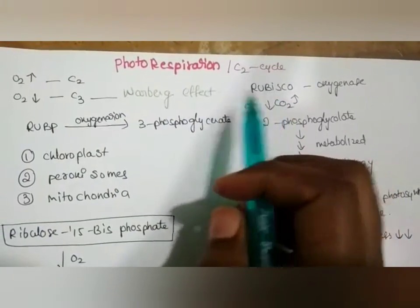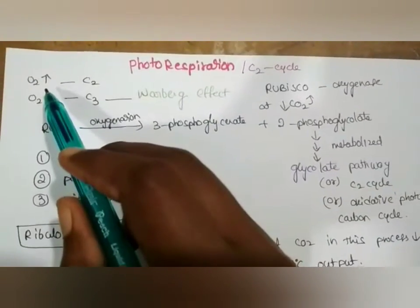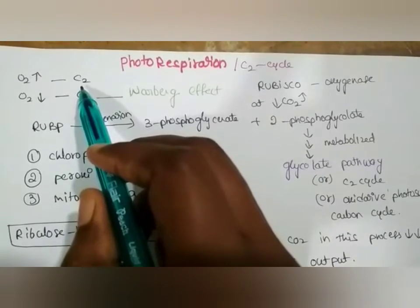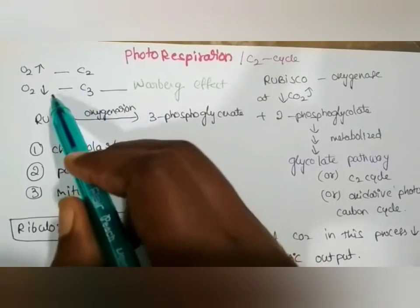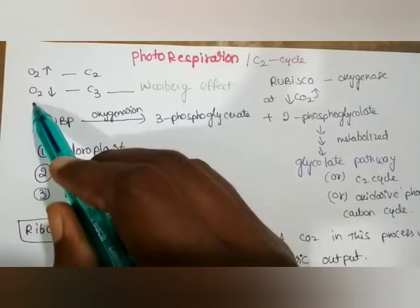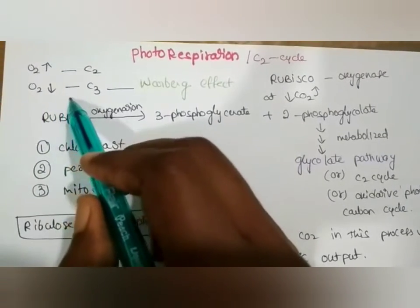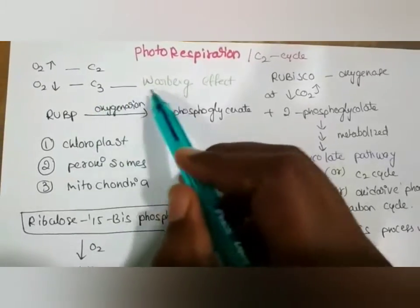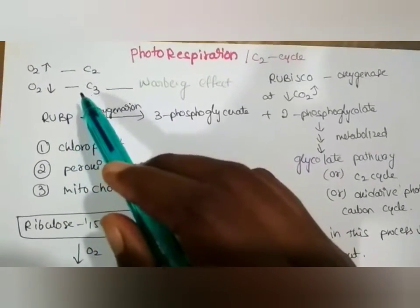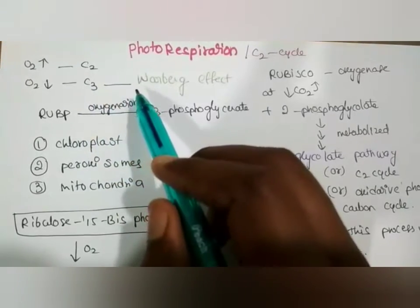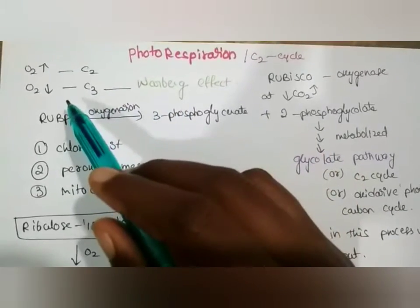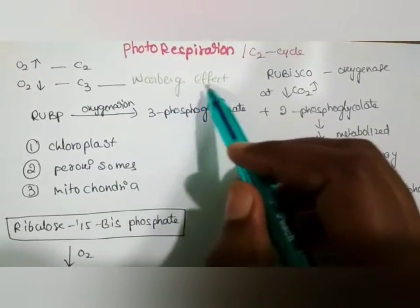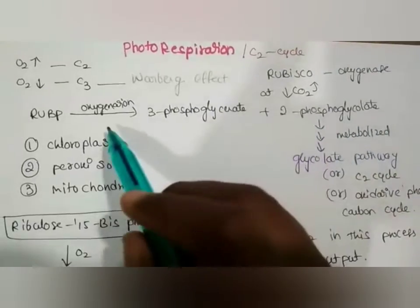When higher quantities of O2 concentrations are present, the C2 cycle will occur. When lower concentrations of CO2 are present, the C3 cycle will take place. This effect of lower CO2 and lower O2 concentration in the atmosphere resulting in the C2 cycle is called the Warburg effect.